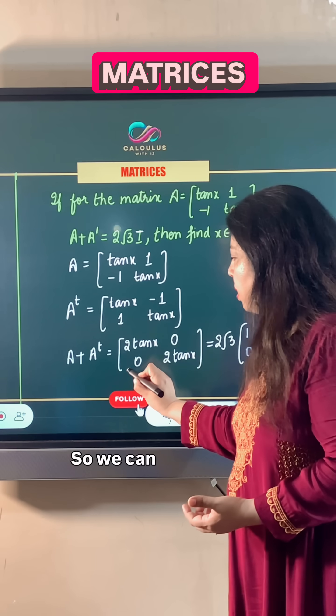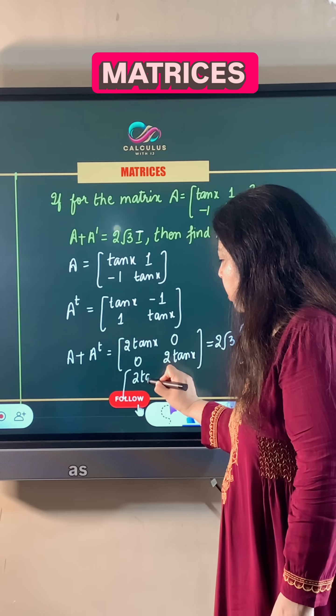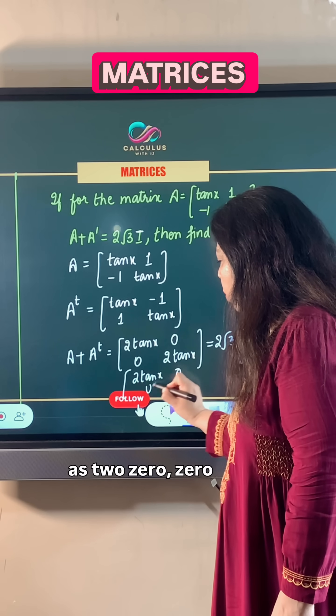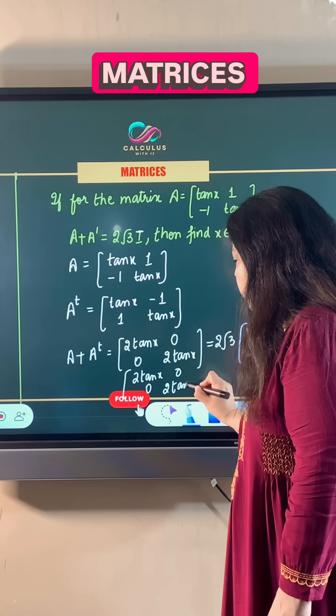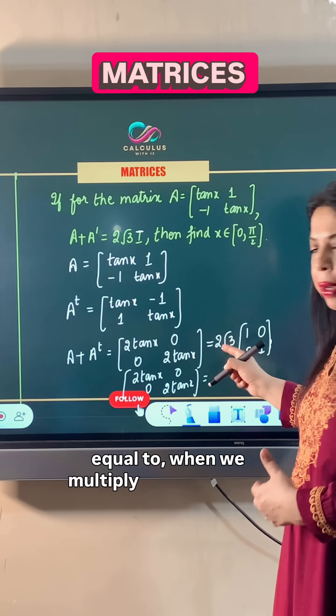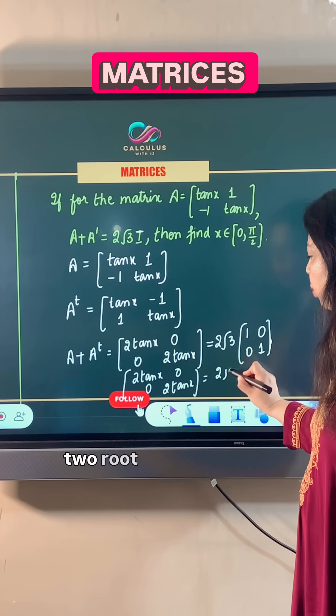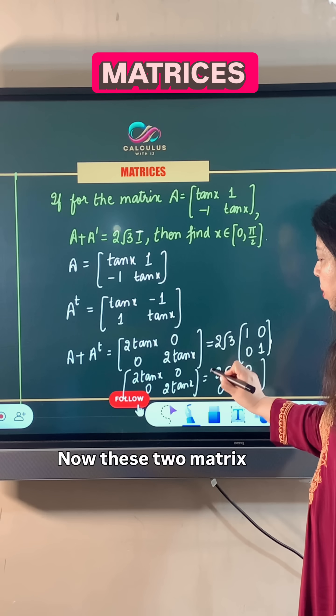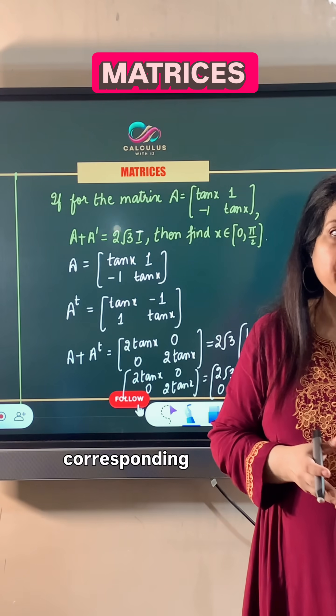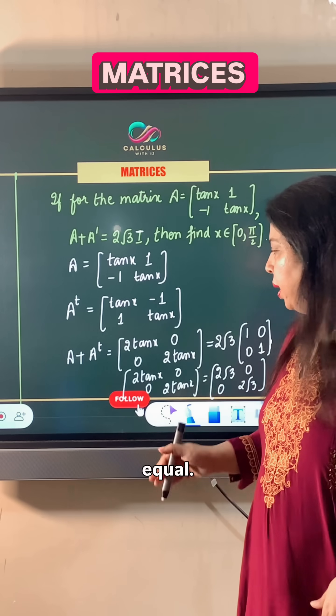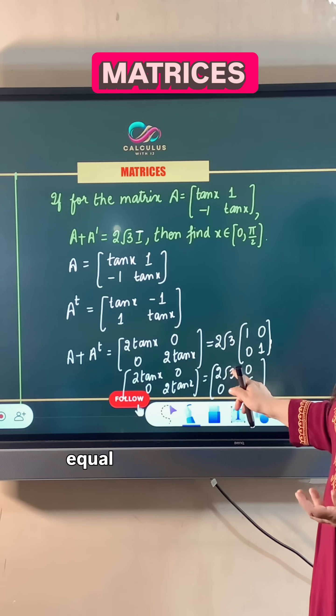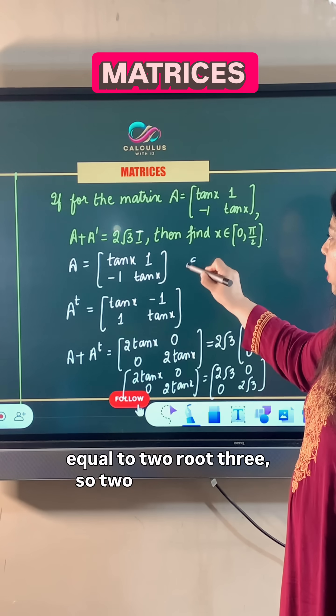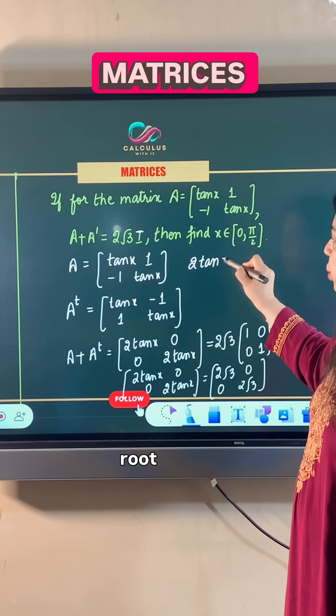So we can write 2 tan x, 0, 0, 2 tan x equals 2 root 3, 0, 0, 2 root 3. Now these two matrices are equal, so their corresponding elements are also equal. That means 2 tan x is equal to 2 root 3.